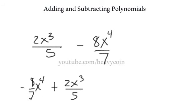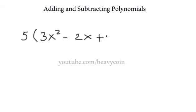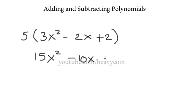Now let's talk about using the distributive property to simplify a polynomial. If we had 5 times the quantity 3x squared minus 2x plus 2, we distribute the 5 across each term: 5 times 3 is 15x squared, minus 10x, plus 10. That's the distributive property — distributing across like such.